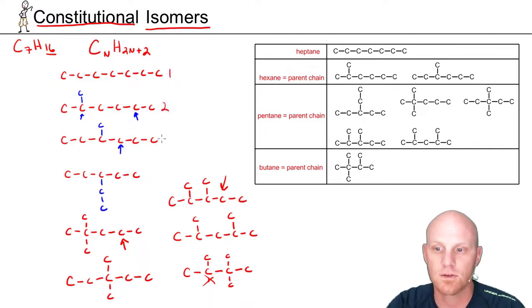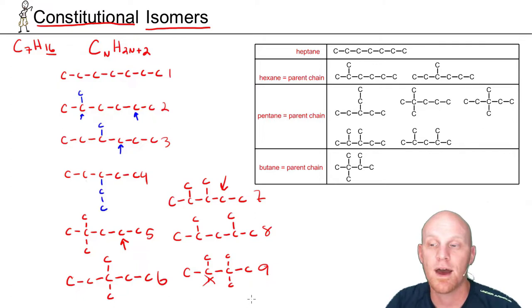And so that's going to lead us to one, two, three, four, five, six, seven, eight, and nine constitutional isomers here for heptane. And those are all kind of in this table here. I just want to show you how to derive. You really want to take the systematic approach in drawing your constitutional isomers. Hope this helps.